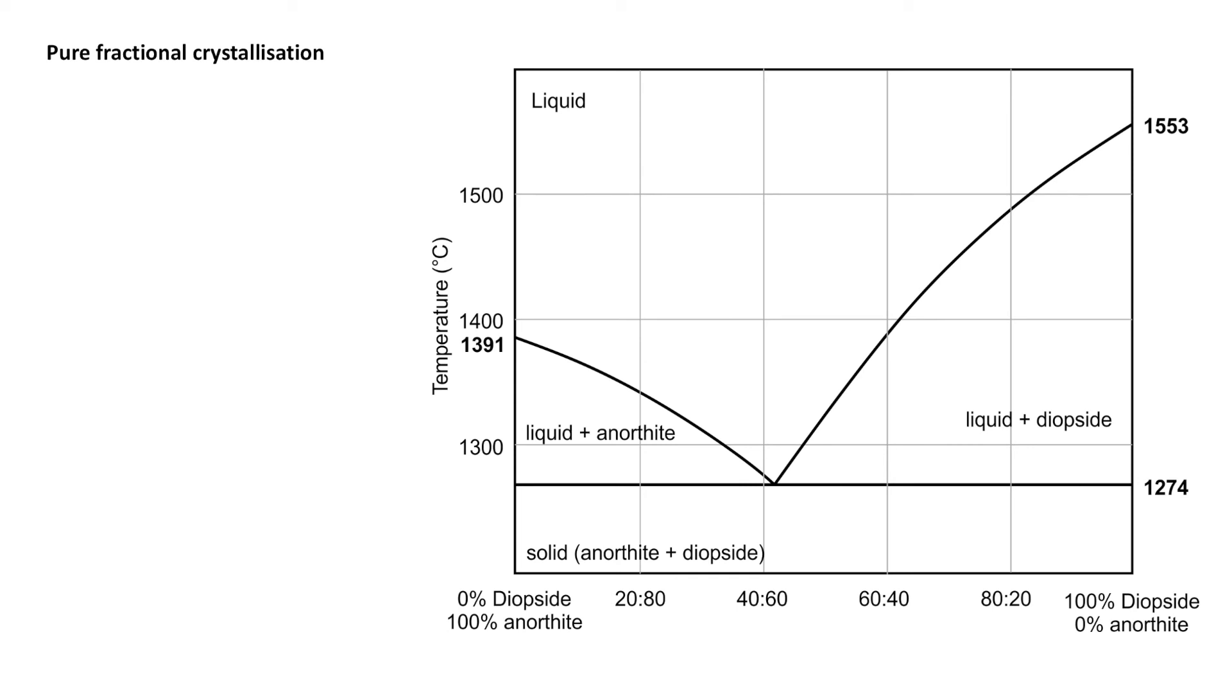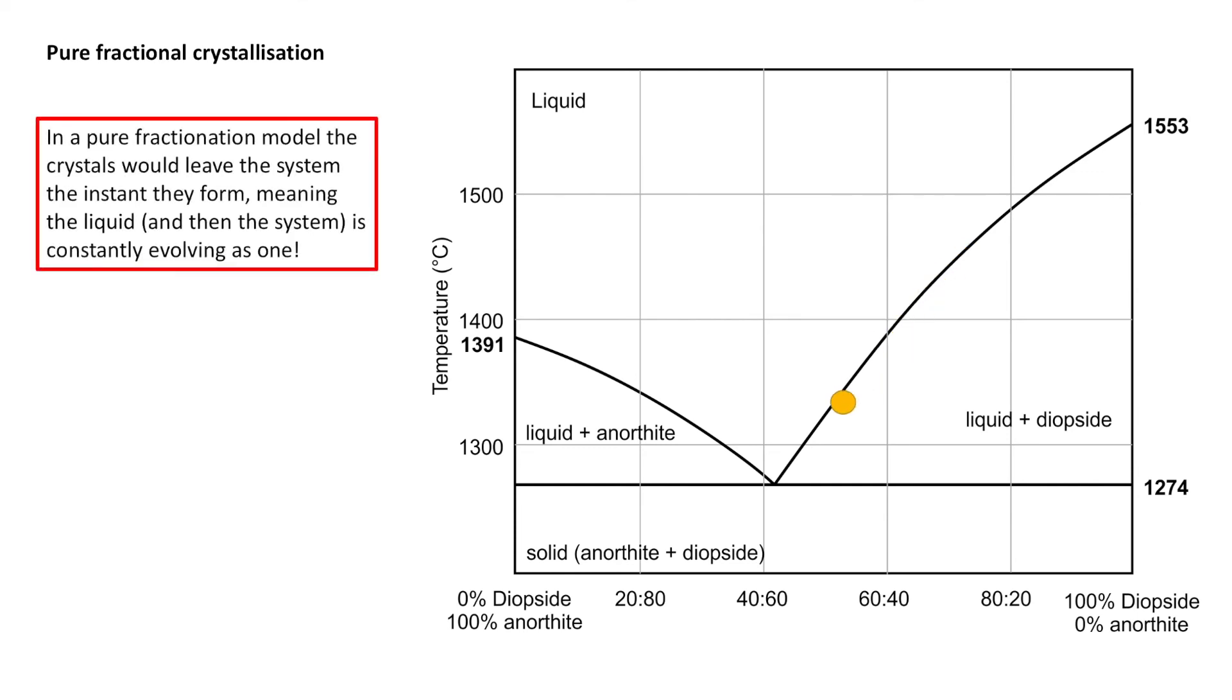What about pure fractional crystallization? So what that means is that the second a crystal is formed, it is removed from the system. So say we start with a liquid at this point, we cool it, we hit our liquidus and we begin to crystallize our first diopside. But that diopside is removed straight away. So really we're monitoring the evolution of the liquid and it's probably going to look something like this. We're going to get to our eutectic point and we're going to end with a eutectic mixture.